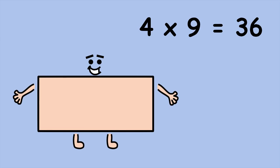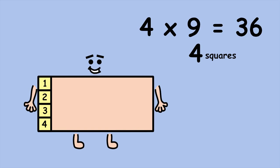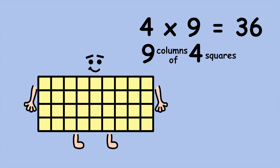If you don't like counting rows, you can count columns instead. There are four squares in a column. Now, how many columns are there? Nine. Nine groups of four, or nine times four equals 36.